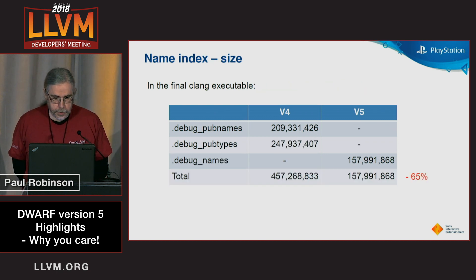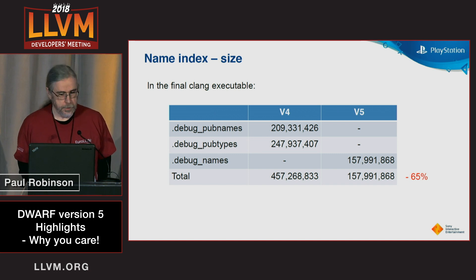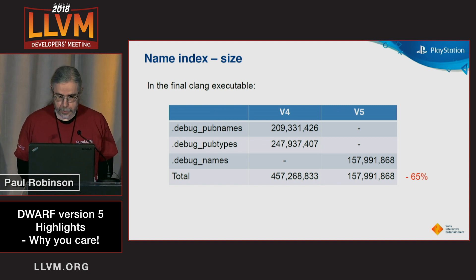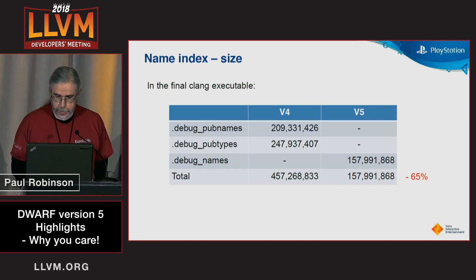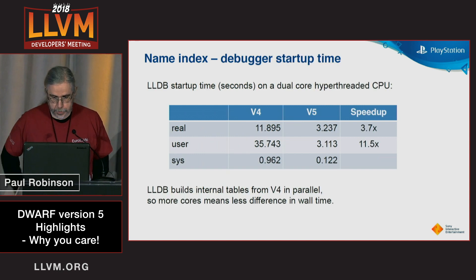On the name index: v4 and older versions of DWARF had a fairly useless name index, which was huge as well as being useless. So in version 5, we defined a new format. Pavel went in and implemented this — it's only about a third of the size of the old tables, and LLDB can use it directly instead of having to build its own table from scratch.